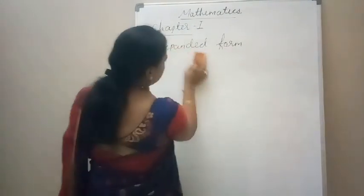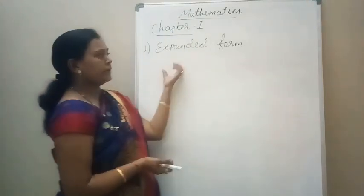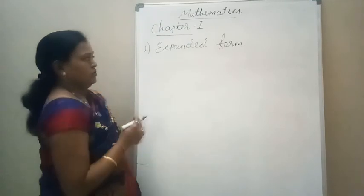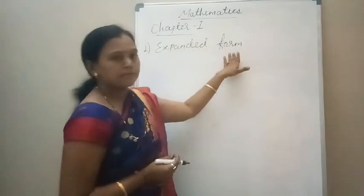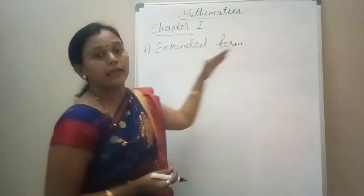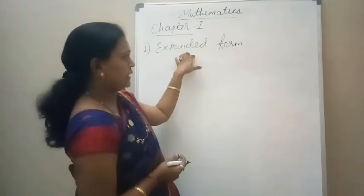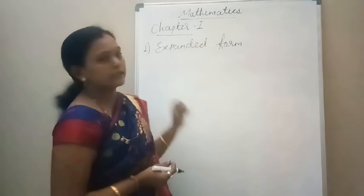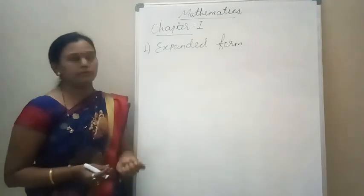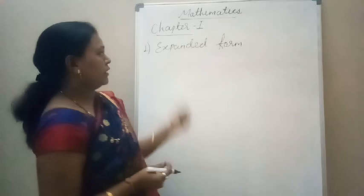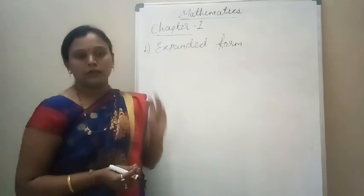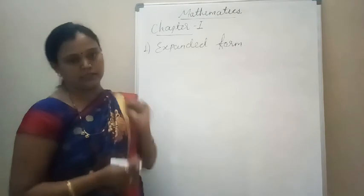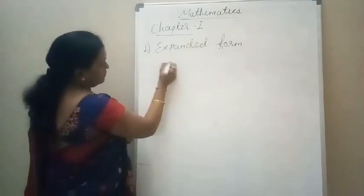First, we will start with the expanded form of any number. Expand means it is an increased form. The expanded form of a number is a way of representation of any number in which we will write the number as a sum of the place value of its digits. Let us take one example.